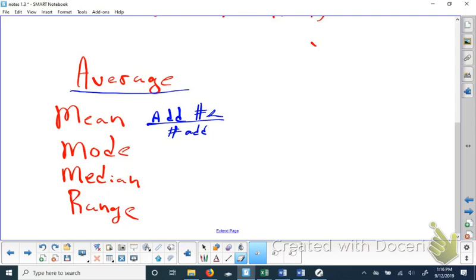So this is the set of data they gave us. If I add all these up, you get 116. And if you divide by 1, 2, 3, 4, 5, 6, 7, then that gives you the answer 16. So 16 would be our mean.